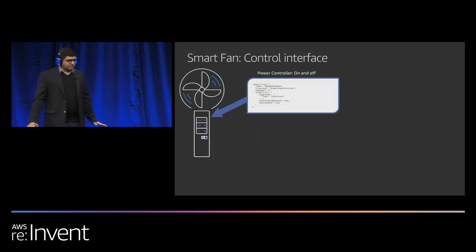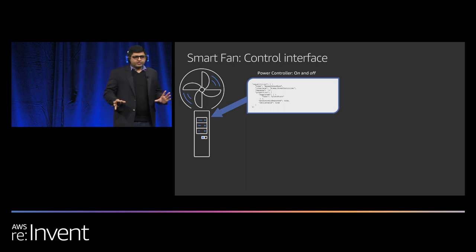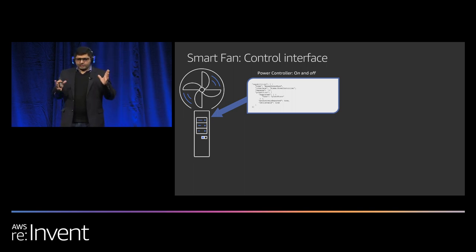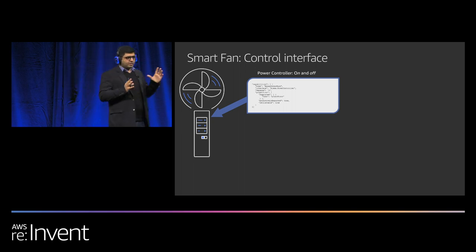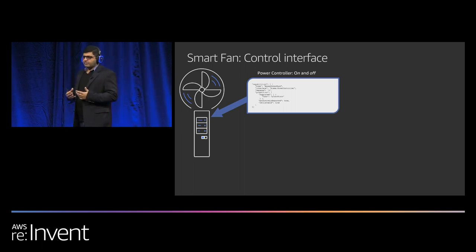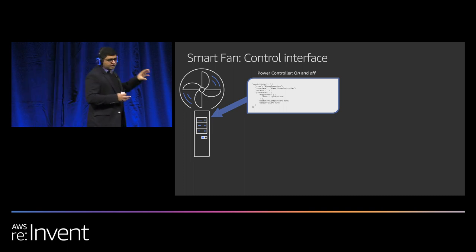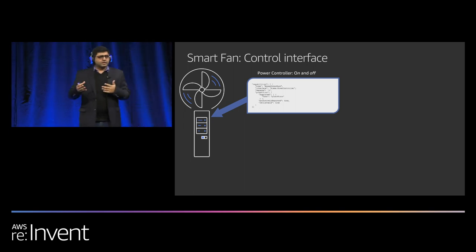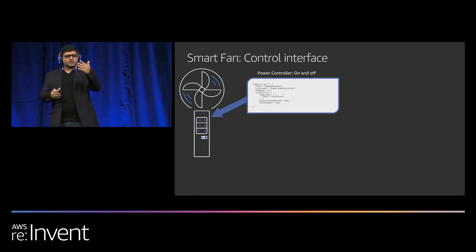Let's take a deep look at the control interface. Here you see the power controller. Controllers are generic bodies — when you specify the capabilities of that controller, you get specific. For example, if I want a fan that cannot be controlled remotely, I set the capability as read-only — meaning it cannot be controlled remotely. You can set it so the state cannot be proactively reported either.